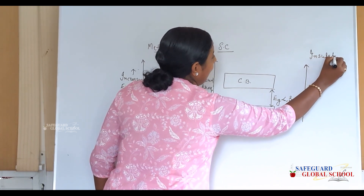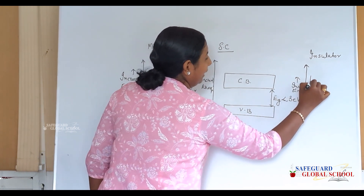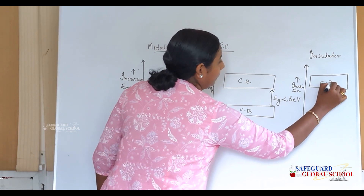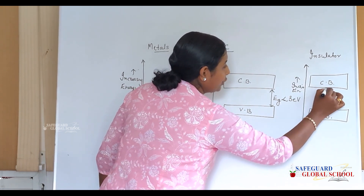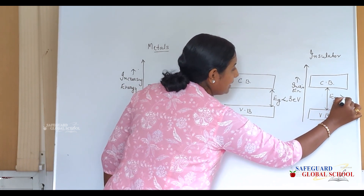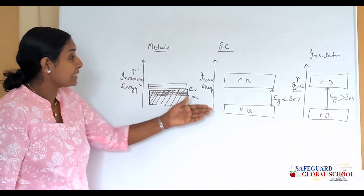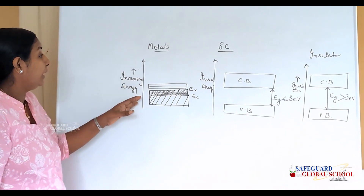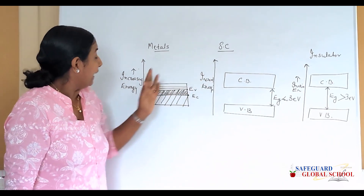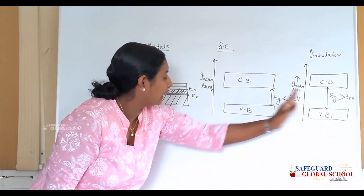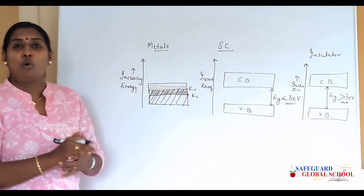For insulators, the valence band and conduction band are present with increasing energy levels, but the forbidden energy gap is greater than 3 electron volts. These are the three categories of materials based on their band gap diagram. Note that you must draw the energy axis thoroughly, indicating less than 3 eV for semiconductors, greater than 3 eV for insulators, and the overlapping region for metals.